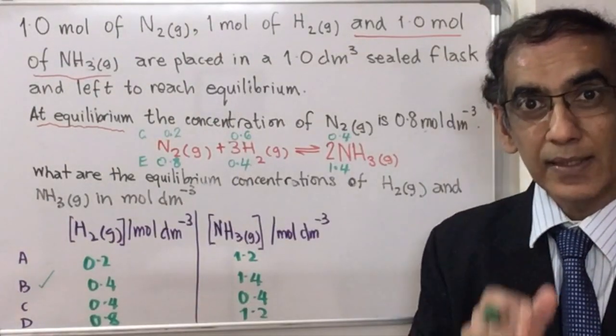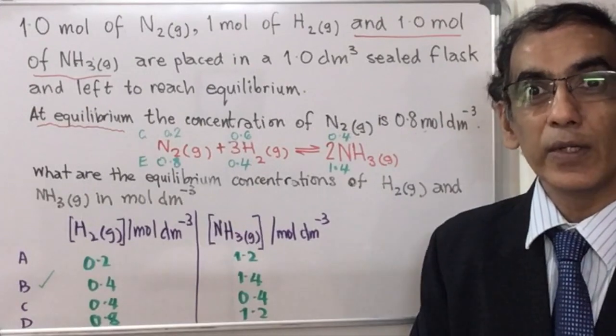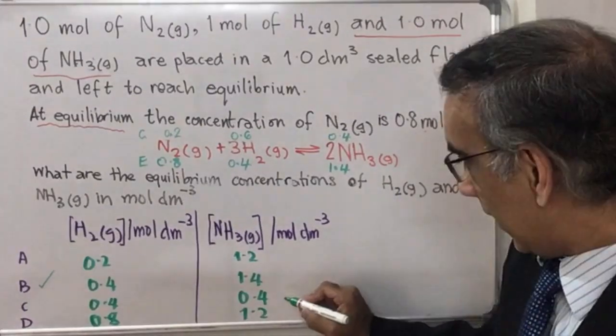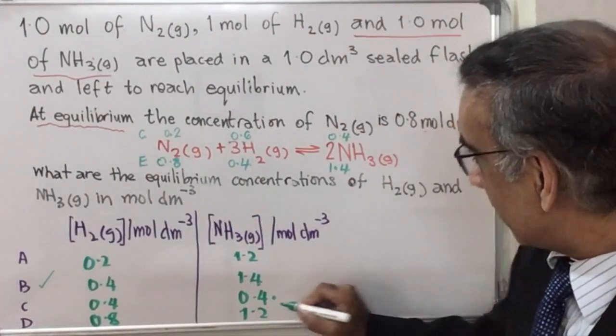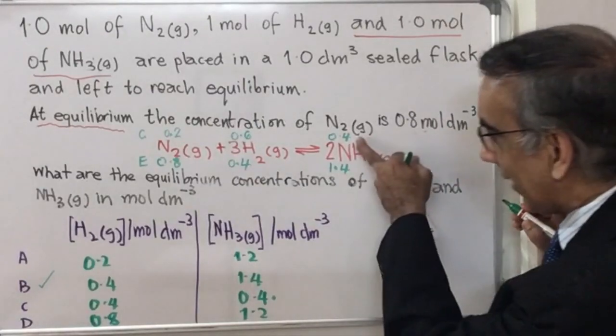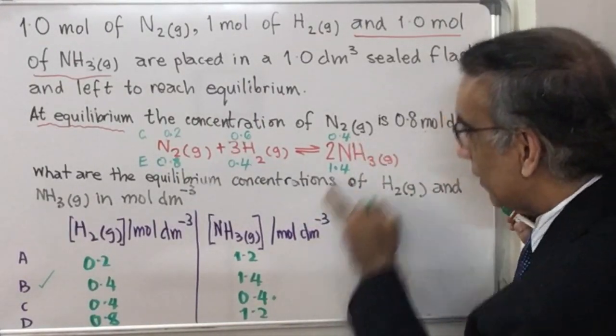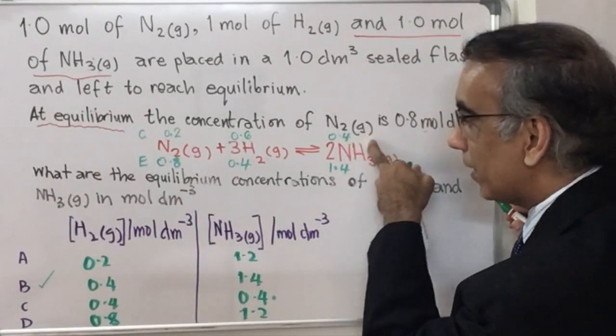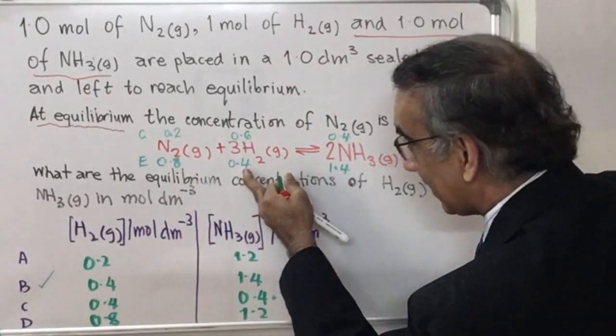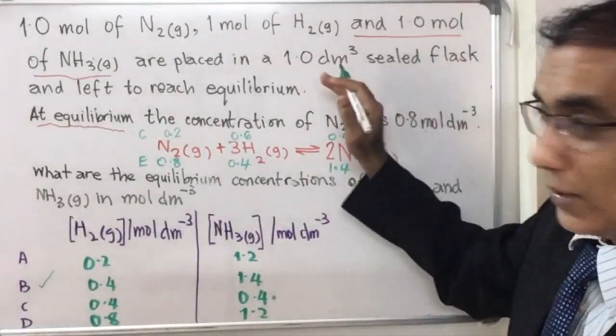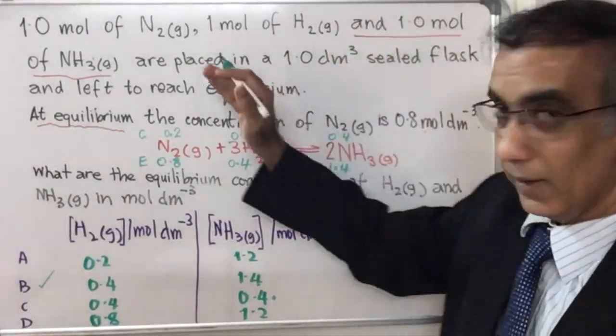The significant distractor, the one that most students would choose as the wrong response, would be C. Because what you would do is you would calculate the 0.4 here and quickly think that you would get 0.4 of this being formed, 0.4 of this being reacted. And what you would forget is that you started with 1 mole of ammonia.